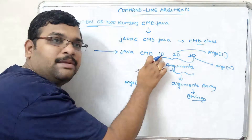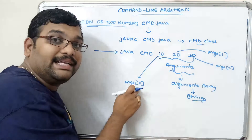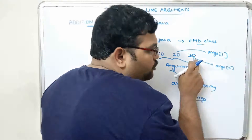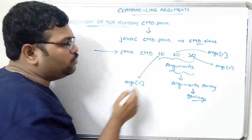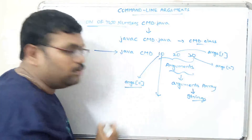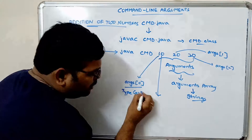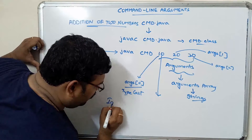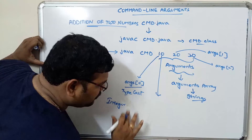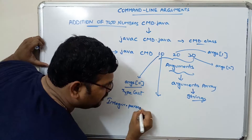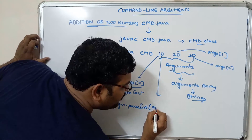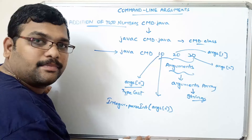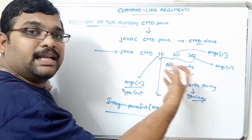For example, if we give 10 as input it is stored in args[0] as string, 20 is stored in args[1] as string, and 30 is stored in args[2] as string. To use these values as integers in our program, we have to typecast them using Integer.parseInt(). So we write Integer.parseInt(args[0]), Integer.parseInt(args[1]), and so on to convert strings to integers.